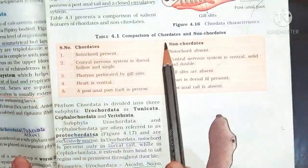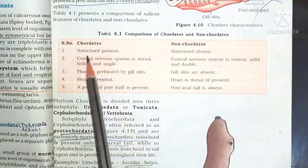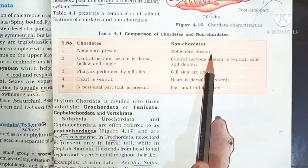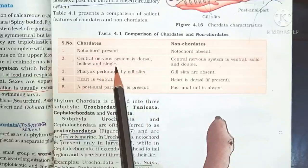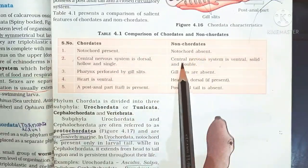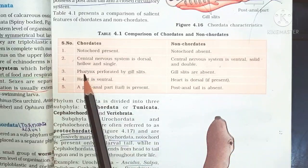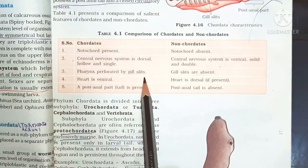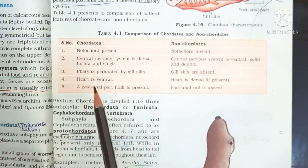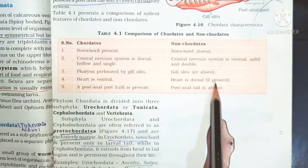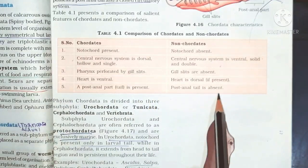Comparison of chordates and non-chordates: In chordates, notochord is present; in non-chordates, absent. Central nervous system is dorsal, hollow, and single in chordates; ventral, solid, and double in non-chordates. Pharynx perforated by gill slits in chordates; absent in non-chordates. Heart is ventral in chordates, dorsal in non-chordates. Post-anal tail present in chordates, absent in non-chordates.